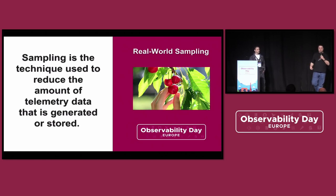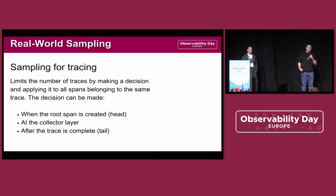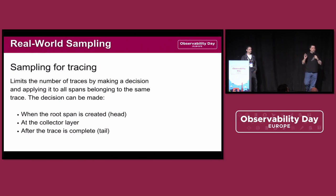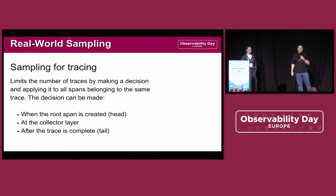So we either generate less data or we store less data. We typically think about tracing when we talk about sampling, and because we only have 20 minutes here I'm focusing on traces. Sampling for tracing is basically the idea of limiting the number of traces by making a decision and applying that decision to all spans belonging to the same trace.